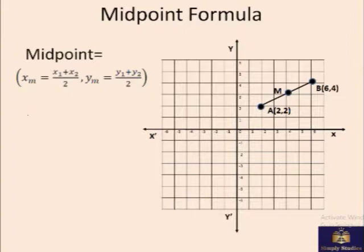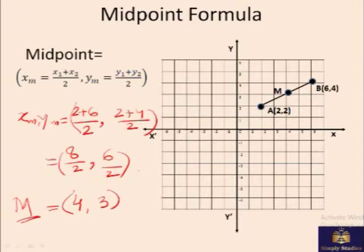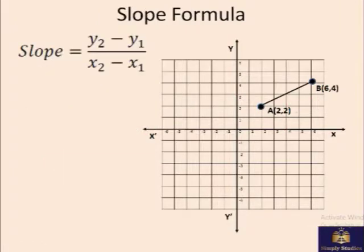So the midpoint in this case will be, let's say it is XM and YM. It's the sum of the X coordinates of both points, so here it will be 2 plus 6 divided by 2. So we are taking the average. The other one, again, 2 plus 4 by 2. It comes out to be 8 over 2, 6 over 2, that is 4 and 3. So the coordinates of the midpoint, if we look here we can see X is 4 and Y is 3.